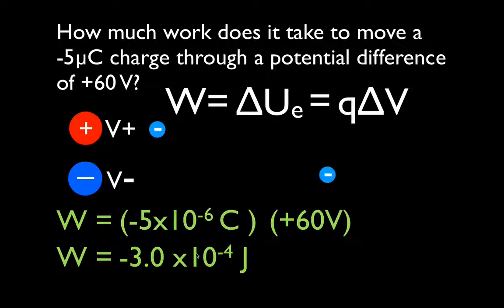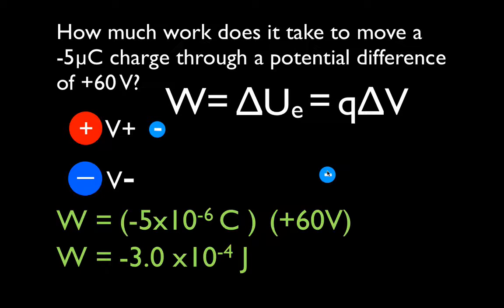So we don't know which case applies — the work is negative, minus 3 times 10 to the minus 4 joules, but we don't know if we have a negative charge moving closer to a positive charge, or a negative charge moving farther away from a negative charge. Thank you very much for watching. If you found that helpful, give me a thumbs up or leave a positive comment below. We will see you in the next video.